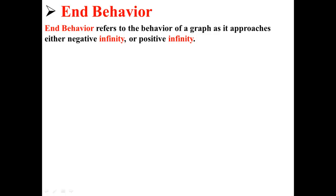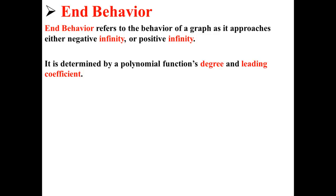End behavior refers to the behavior of a graph as it approaches either negative infinity or positive infinity. It is determined by a polynomial function's degree and leading coefficient. Here we have an example of a polynomial function: 7w squared minus 4w plus 3. The degree is 2 because we have w squared, and the leading coefficient is positive 7.